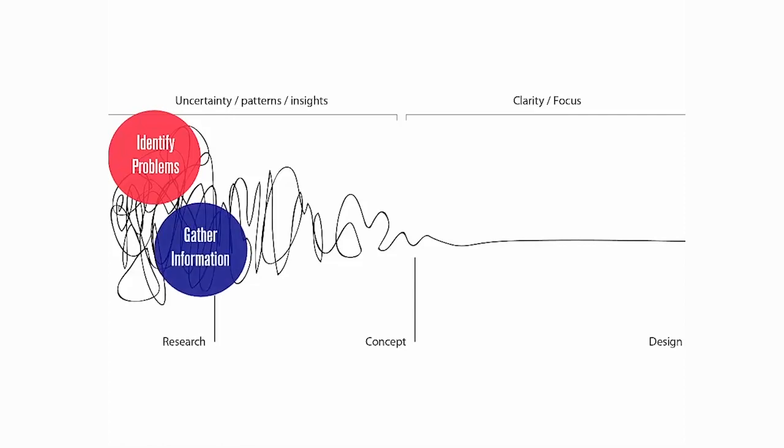Step two is to gather information. Once you know the kinds of problems that you want to solve, it's important to use all the different methods that you can to gather information. This could include doing interviews, doing observations, following people around, essentially trying to understand the context in which the problem exists so that you can come up with a solution that is appropriate to that context. That's phase two.